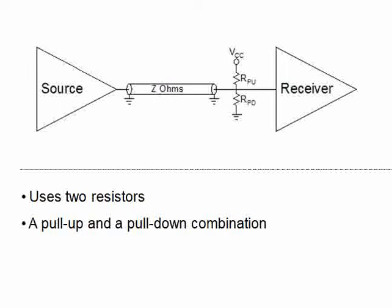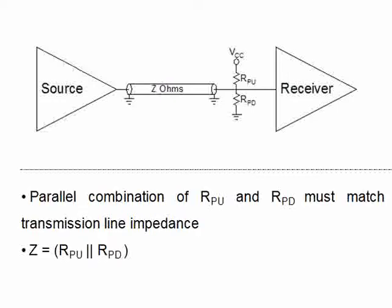The Thevenin termination can be said as an extension of parallel termination where two resistors are used. One looks like a pull-up resistor and the other one is pull-down. Actually they are pull-up and pull-down which are used and they have two purposes. One is they act as terminators and also pull-up and pull-down. So let us talk in detail about the Thevenin termination.